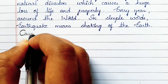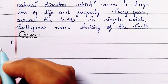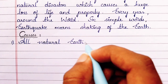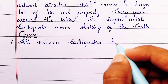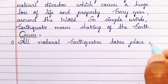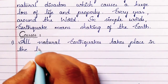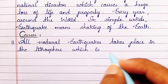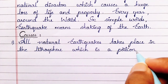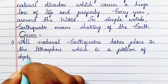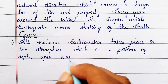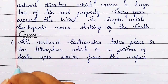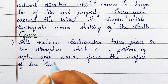Causes of earthquake: there are some reasons for this disaster to happen. All natural earthquakes take place in the lithosphere, which is a portion of depth up to 200 km from the surface of the earth.